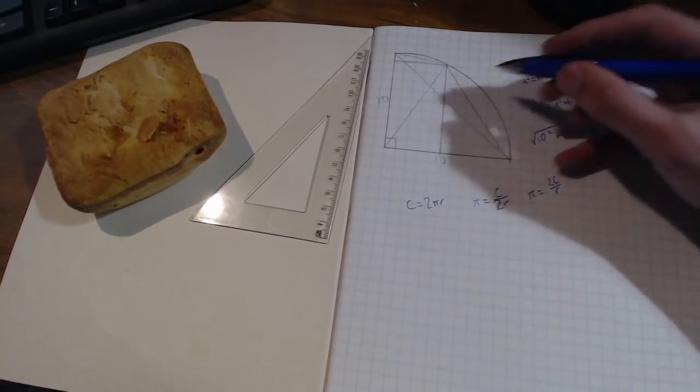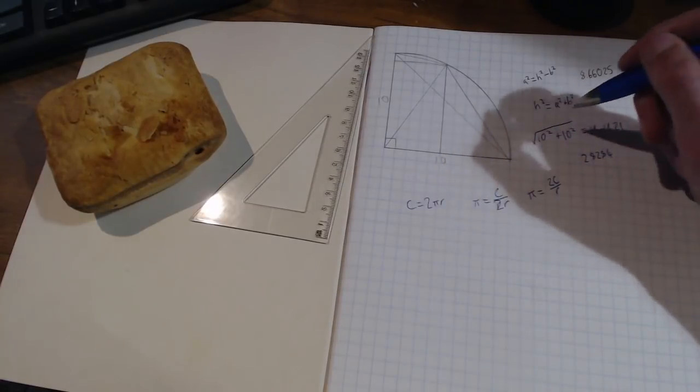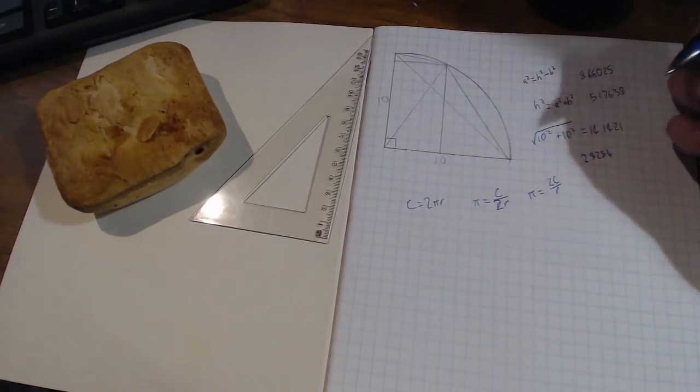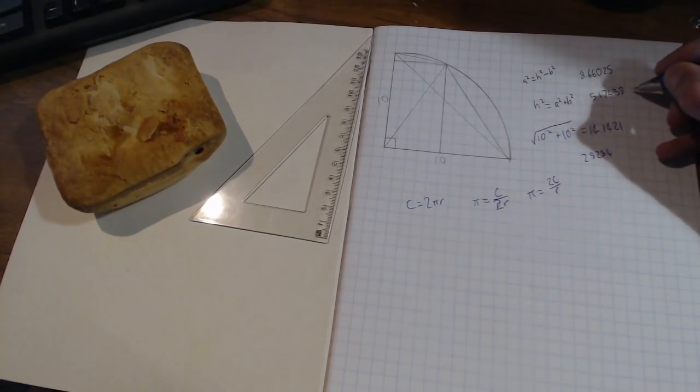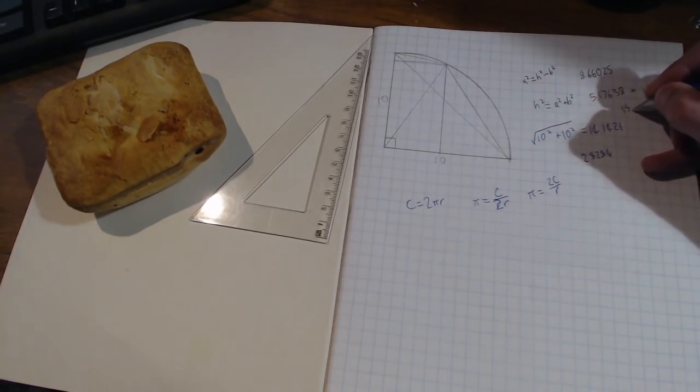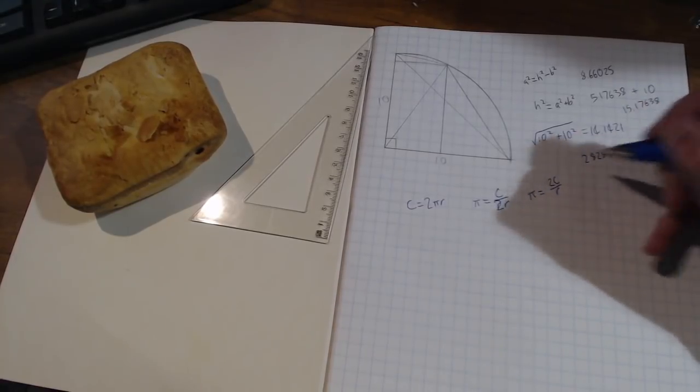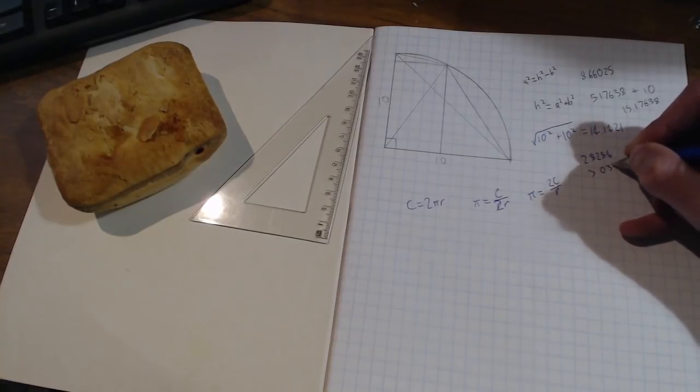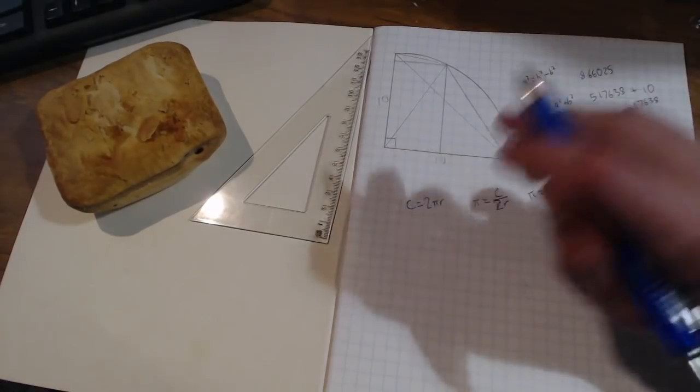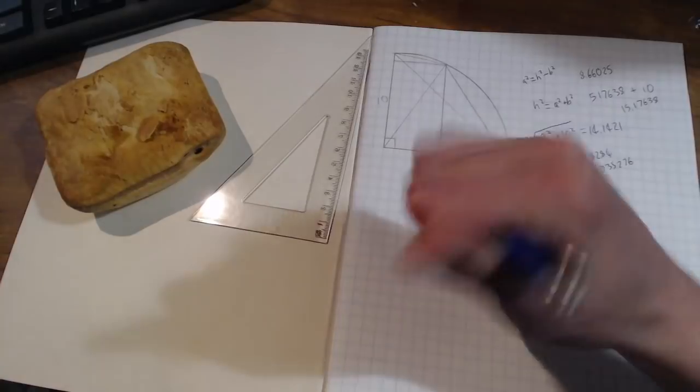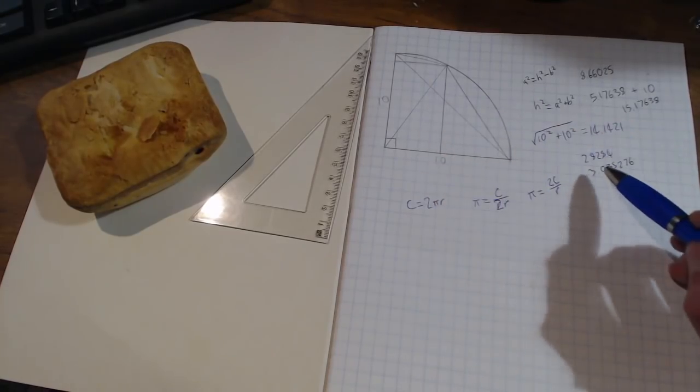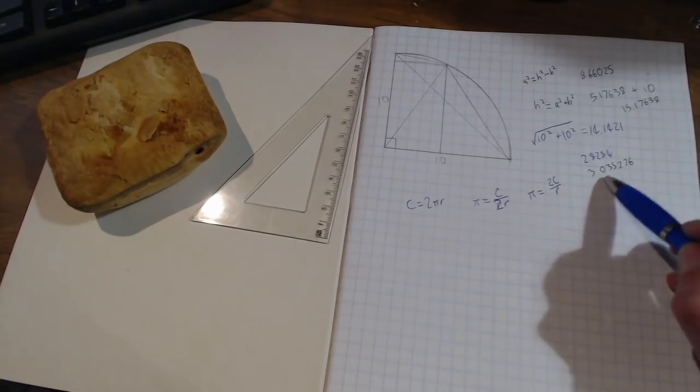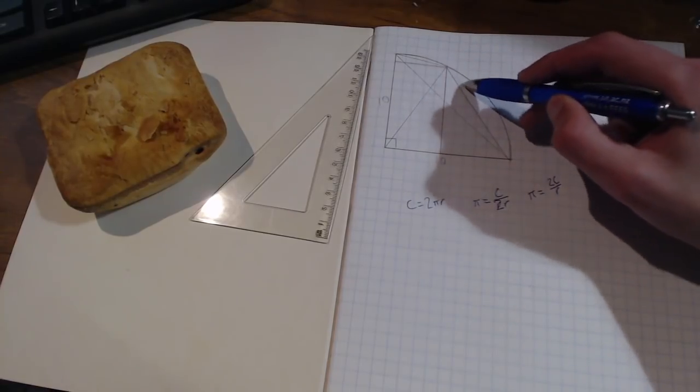So now here comes the simple part. We have the height of this triangle which is 8.66025 and we have the base of the triangle which is 5. You do the Pythagorean theorem on it and you get a result of 10. Now all you have to do is add these two numbers together and it's 15.17638. Now what we do is we use this number instead of this number for c and when we do that we get a result of 3.035276. If you've been following along, congratulations you have now got a better approximation of Pi. As we add more and more triangles we should get a closer and closer approximation of Pi. You'll never actually go above Pi using this method because all the triangles are contained nicely within the circle.